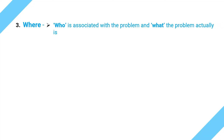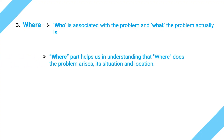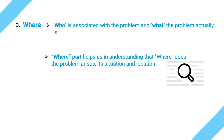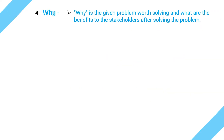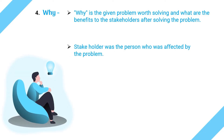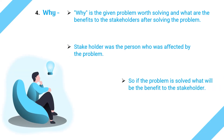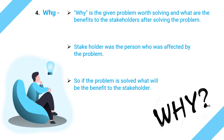The third W is 'where'. Now that you know who is associated with the problem and what the problem actually is, the where part helps us understand where the problem arises — its situation, context, and location. The last W is 'why'. Why tells us why the given problem is worth solving and what the benefits to the stakeholders are after solving the problem.